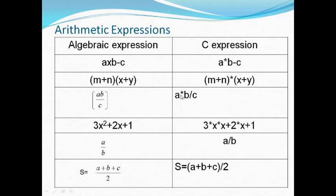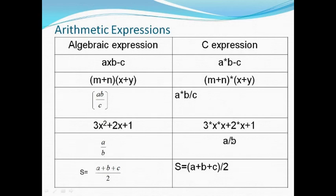The star symbol is used for multiplication and the slash symbol is used for division. For the expression 3x² + 2x + 1, we cannot write it as 3x square in C. If it is a divided by b it should be written as a / b. If the expression is s = (a + b + c) / 2, we have to write it in C as s = (a + b + c) / 2.